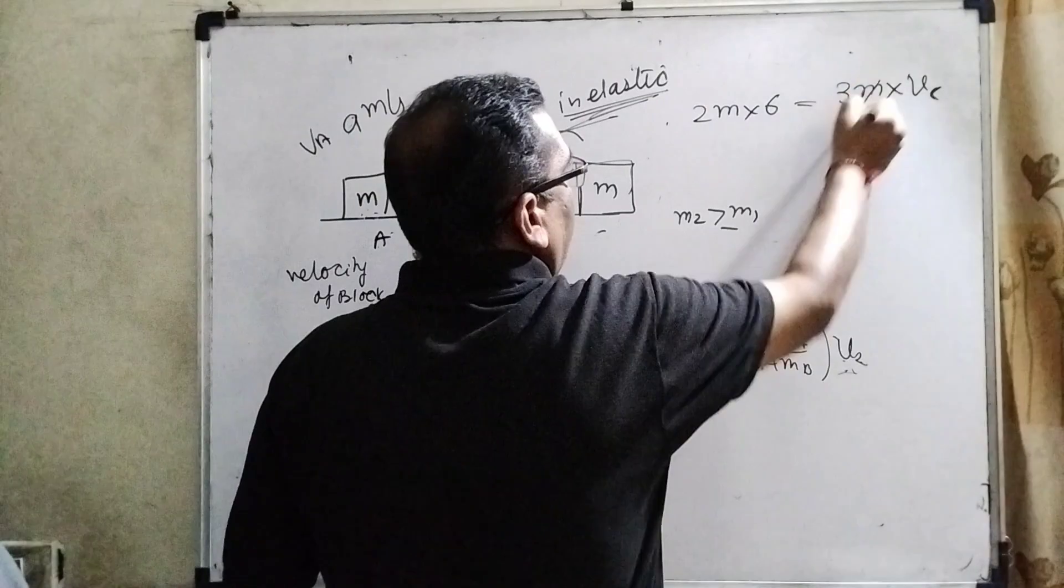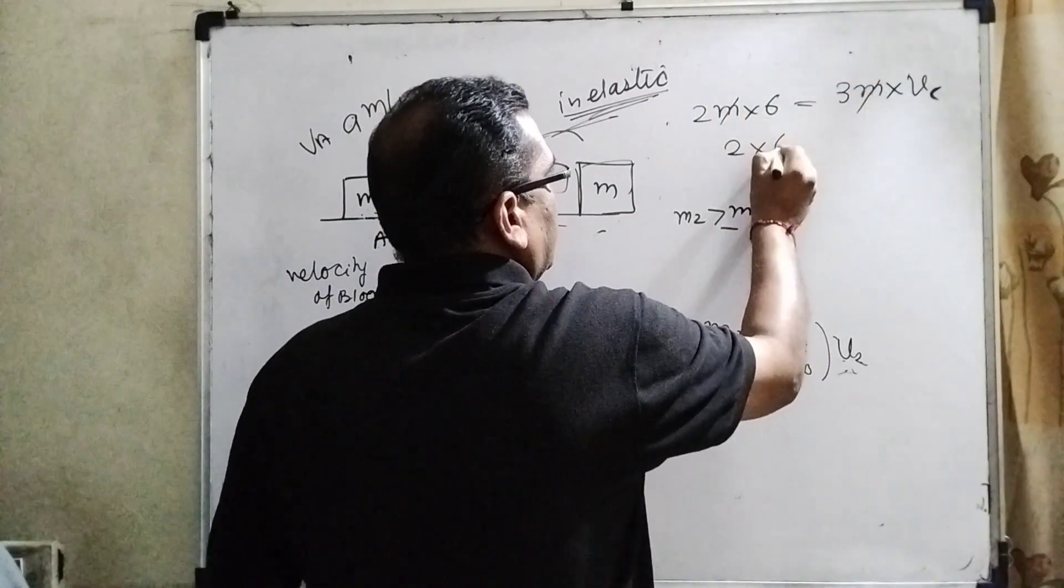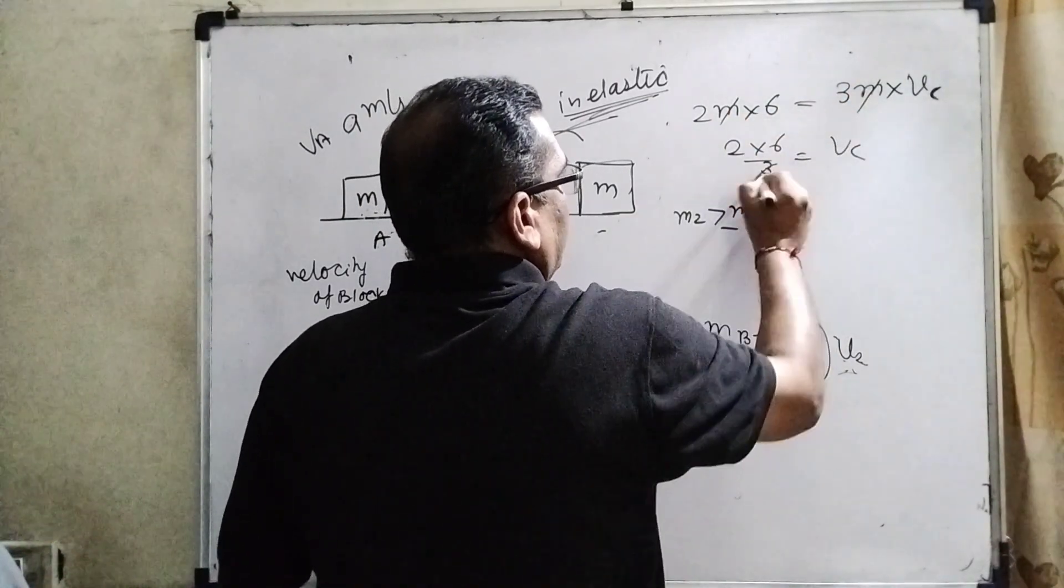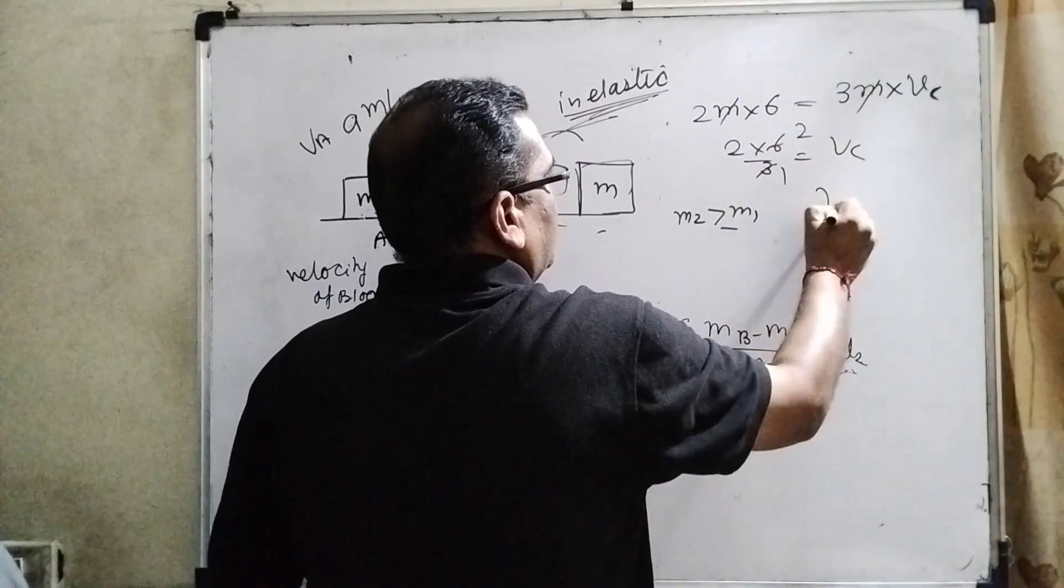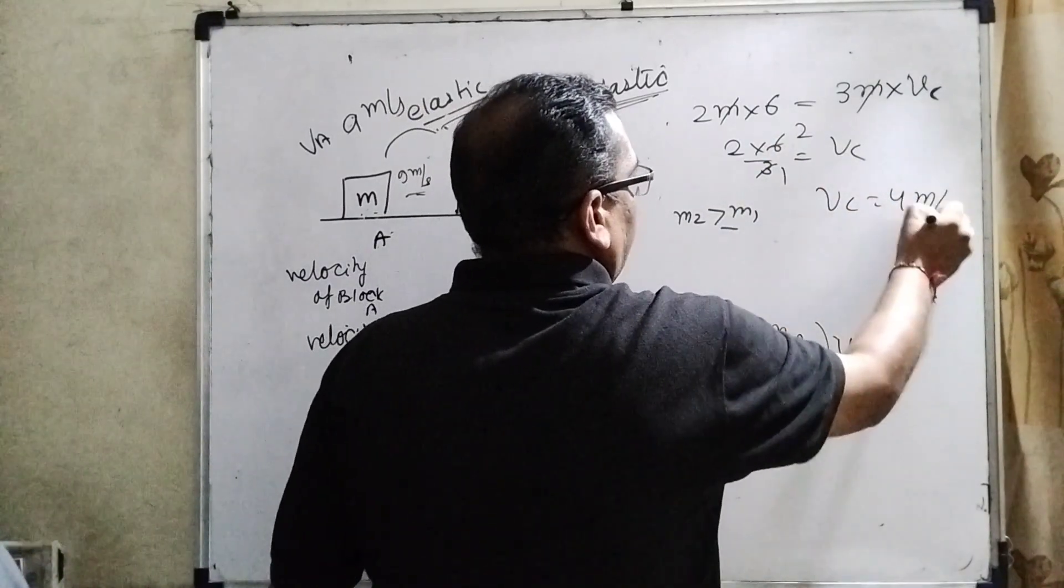Then M and M cancel out. 2 into 6 divided by 3. Then 3 ones are 3, 3 twos are 6. VC equal to 4 meter per second.